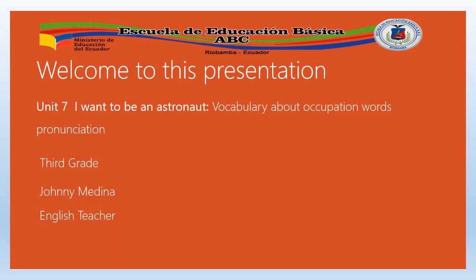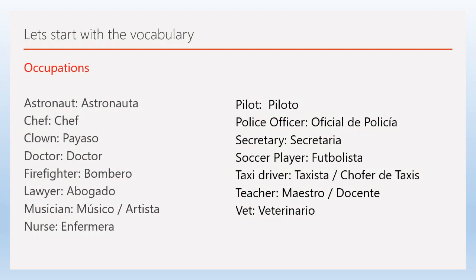Welcome to this presentation. This is Unit 7: I Want to Be an Astronaut — vocabulary about occupation words and pronunciation. This is for third grade. I'm your teacher, Johnny Medina. Let's start with the vocabulary. We're going to talk about occupations in both Spanish and English. Let's see the vocabulary that corresponds to Unit 7, starting with astronaut.